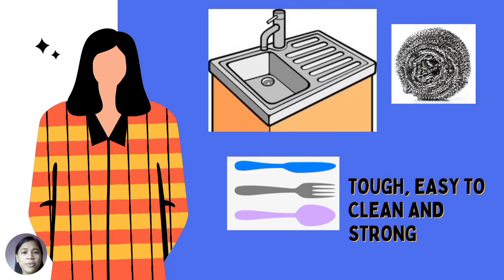Try to help your mother scrub the steel sink using steel wool or wire sponge. The sink and steel wool are made up of stainless steel. They are important because the sink is used to hold water when you wash things. They are also tough, easy to clean, and strong. Some materials like fork, spoon, and knife are also made from stainless steel.